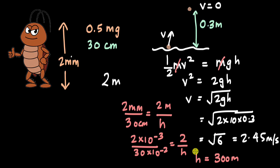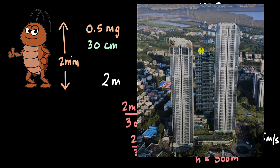So this really means that if a human could jump like a flea they would be able to reach a height of 300 meters. To put it in perspective, that means in a single jump we are able to reach the top of this building from the ground.